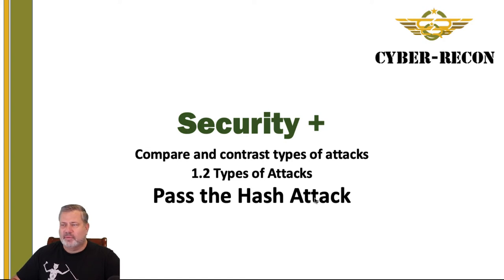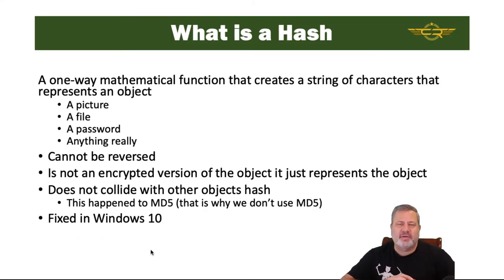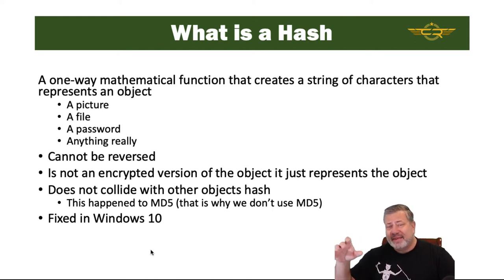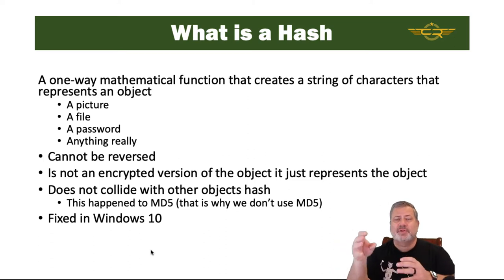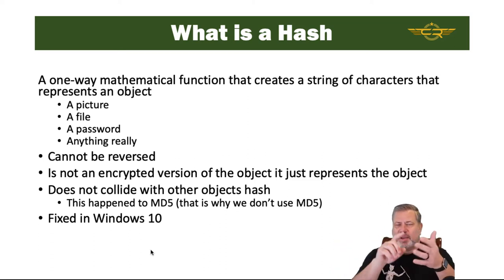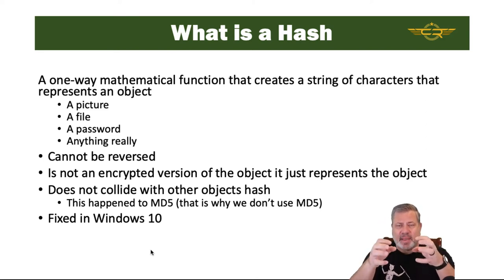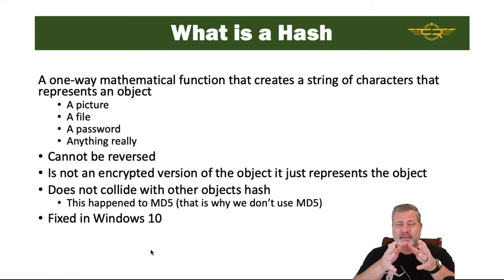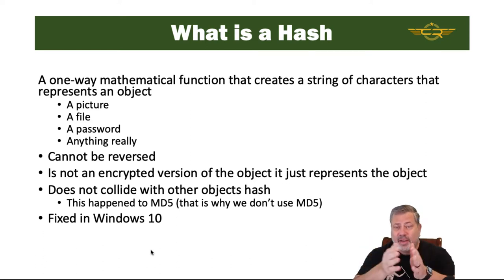When we talk about pass the hash attack, we definitely have to talk about how hashing works and how this can be manipulated. First, we need to talk about what a hash is. A hash is a one-way mathematical function that creates a string of characters that represents that object. The object itself can be a picture, a file, a password, really anything. The way the math works, it can't be reversed.